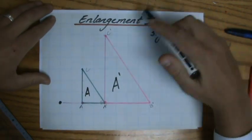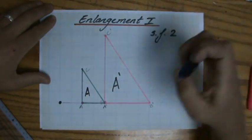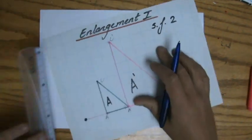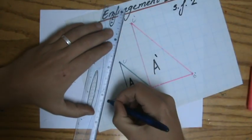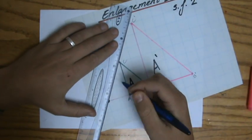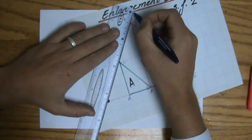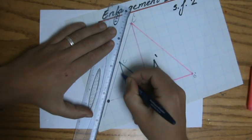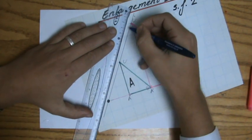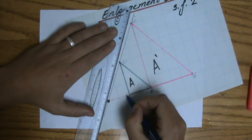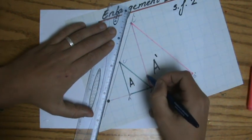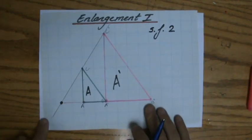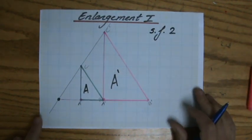Now, that last point, point C, or C apostrophe, I just found by multiplying this length by 2. But let me just check if that is right. If from my center of enlargement, towards the original point C, I go 2 to the right and then 3 up, then after the enlargement, I need to go 4 to the right and 6 up. You multiply everything by the scale factor, which happens to be 2 in this particular case.